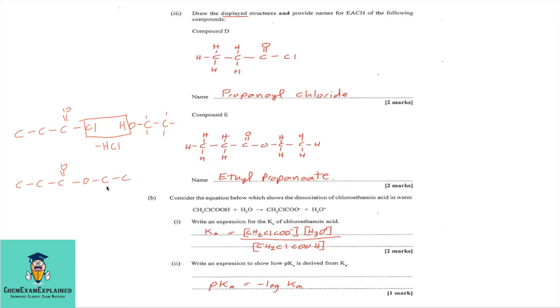Hence, ethyl propanoate. So, compound E is ethyl propanoate.